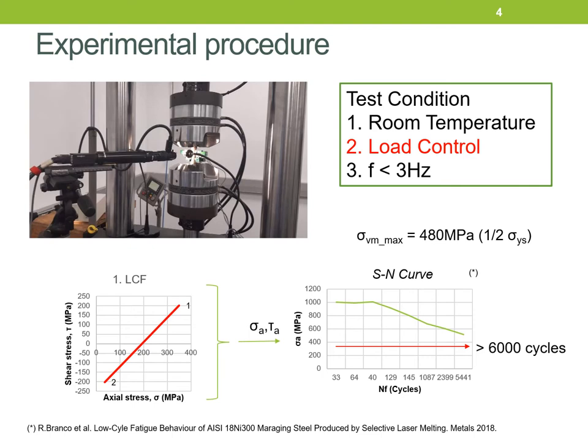This test was conducted in a MTS-809 servo-hydraulic machine that produced axial loading and reverse torsion. Two types of loading path were studied to test the material at low cycle and high cycle fatigue. Using previous experimental data of this material to obtain a load estimation, the shear and normal stress values of the loading path for low cycle fatigue show a maximum equivalent stress around half the yield stress of the material, producing a fatigue life around 6,000 cycles.